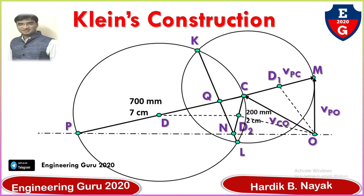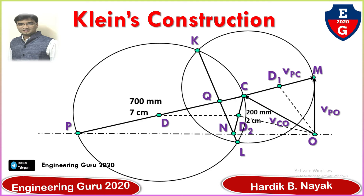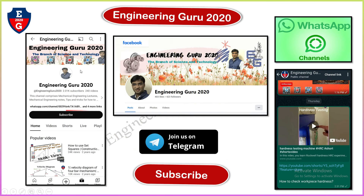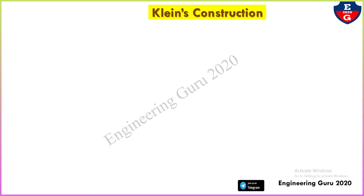Hello everyone, welcome to my YouTube channel Engineering Guru. In this video I will cover one more important topic of kinematics in Theory of Machines subject, and the topic is Klein's construction. Klein's construction method is used to find the velocity and acceleration of a link. You can connect with Engineering Guru by subscribing, following the page, and joining the Telegram and WhatsApp channels and group.